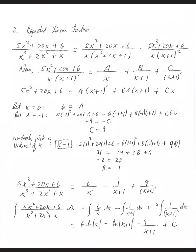Using the same technique as the last example, if we let x be 0, the B and C terms go away. Plugging in 0: 5 times 0 squared plus 20 times 0 plus 6 equals A times 0 plus 1 squared, which gives 6 equals A. So A equals 6, which is the numerator of the first fraction.